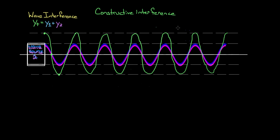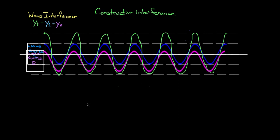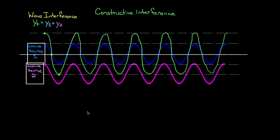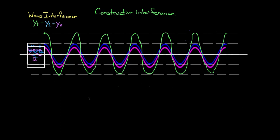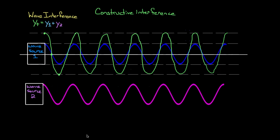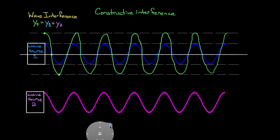So that was constructive interference. These waves were constructive because wave source two looked exactly like wave source one, and we just overlapped them and got double the wave.